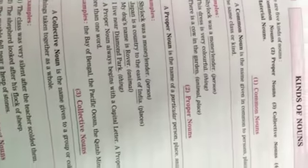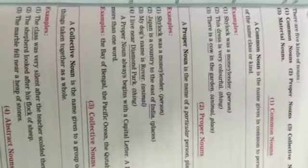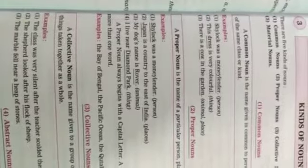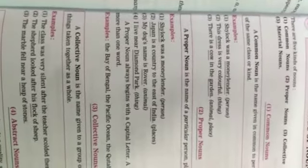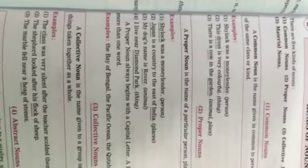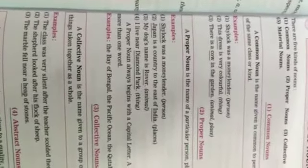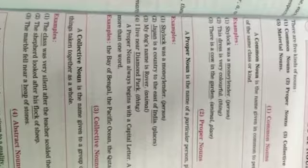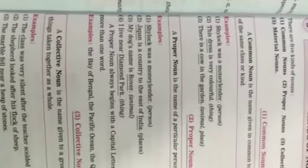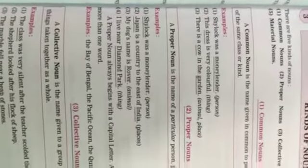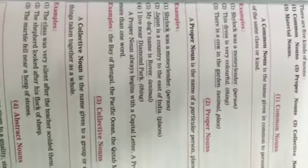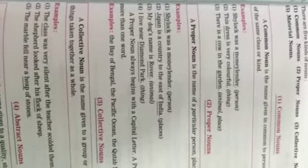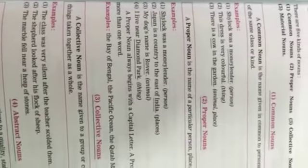So children, we have studied about nouns. Nouns means the naming word — name of a person, place, animal or thing. Now here we have to study the kinds of nouns. The basic 5 kinds of nouns we have to study.